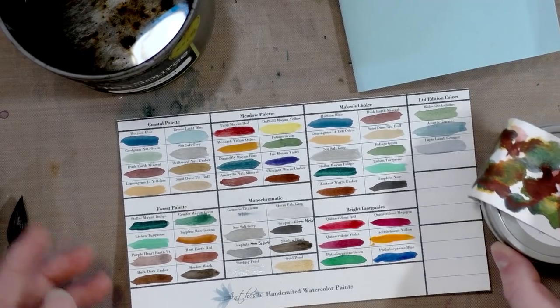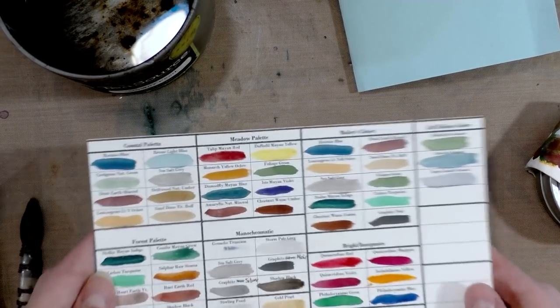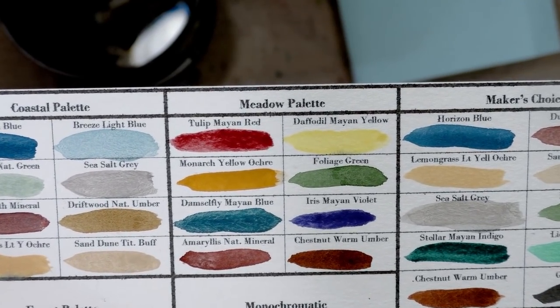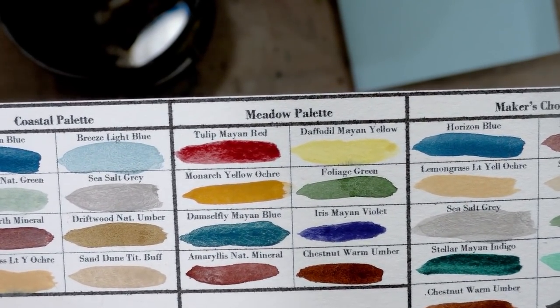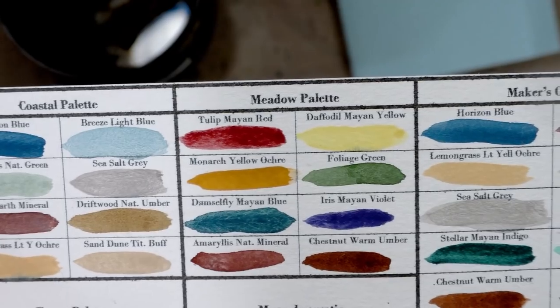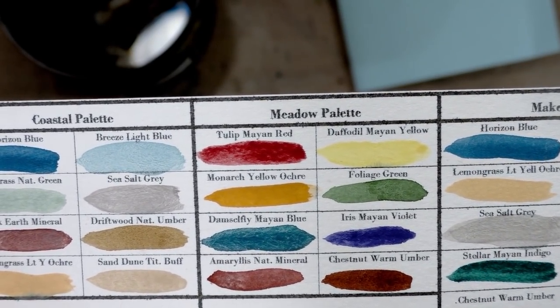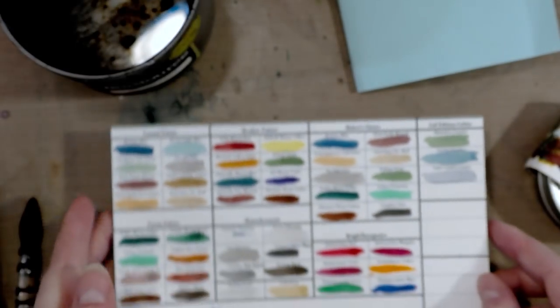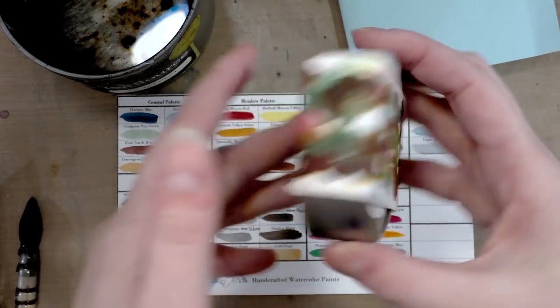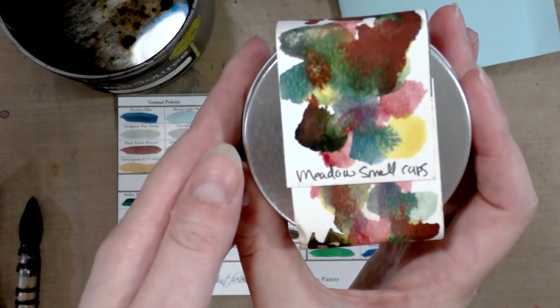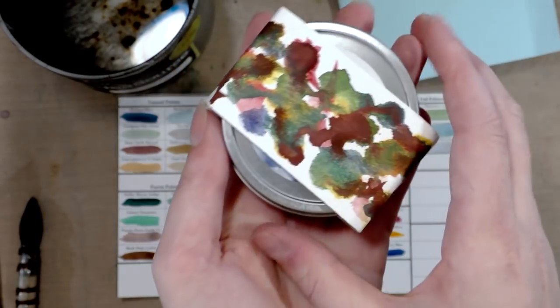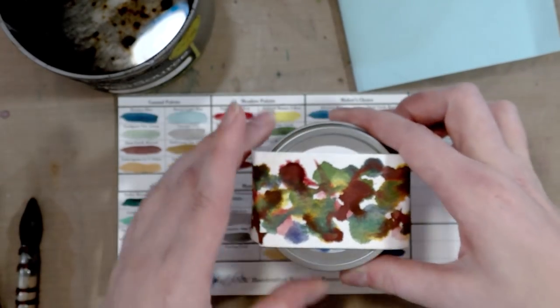This is the Meadow Palette. It has Tulip Mayan Red, Daffodil Mayan Yellow, Monarch Yellow Ochre, Foliage Green, Damselfly Mayan Blue, Iris Mayan Violet, Amaryllis Natural Mineral, and Chestnut Warm Umber. The tin it comes in has little swatches from the palette itself, which is also just a really nice touch.